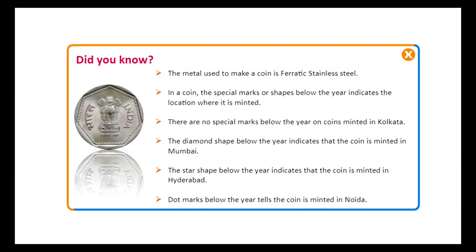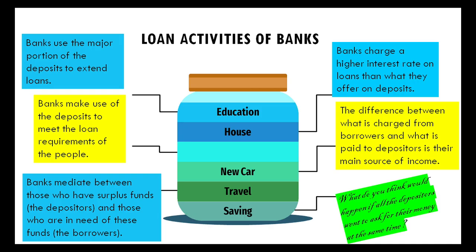Fun fact about coins: special marks below the year on a coin indicate where it was minted. No dot below the year means the coin was minted in Kolkata. A diamond shape means Mumbai, a star shape means Hyderabad, and a dot mark means Noida.